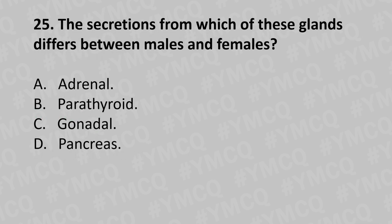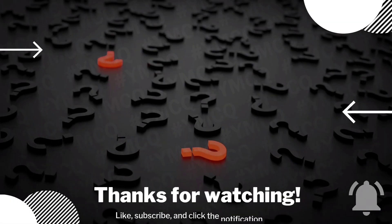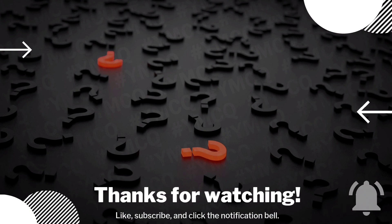Moving to our twenty-fifth question. The secretions from which gland differ between males and females? Option A: adrenal. Option B: parathyroid. Option C: gonadal. Option D: pancreas. And the answer is Option C: gonadal.